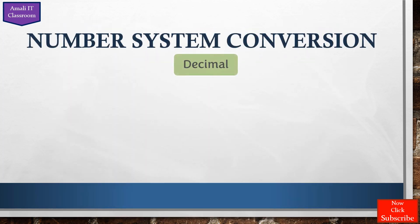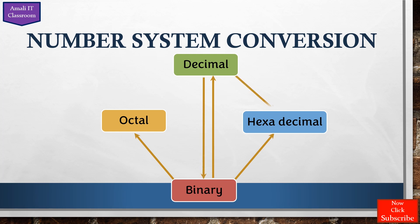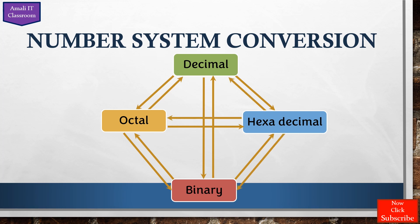Now we will see how to convert between different number systems. Binary can be converted into decimal, octal, or hexadecimal. Decimal can be converted into octal, binary, or hexadecimal. Likewise, octal and hexadecimal can also be converted into different number systems. In total, there are 12 conversion methods you should learn.